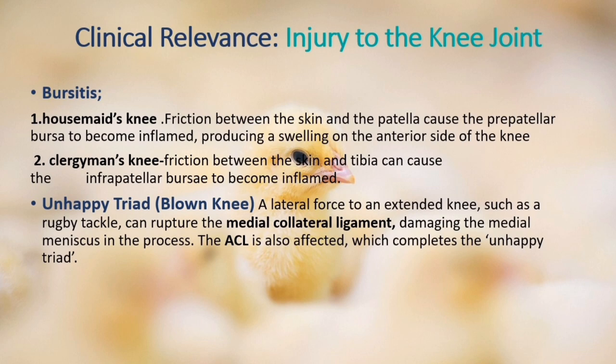Bursitis. Friction between the skin and the patella causes the prepatellar bursae to become inflamed, producing a swelling on the anterior knee, known as housemaid's knee. Similarly, friction between the skin and tibia can inflame the infrapatellar bursae, resulting in clergyman's knee. The unhappy triad (blown knee): a lateral force to an extended knee, such as in a rugby tackle, can rupture the medial collateral ligament, damage the medial meniscus, and also affect the ACL, completing the unhappy triad.